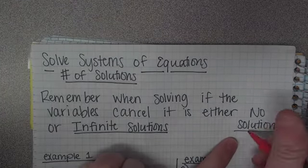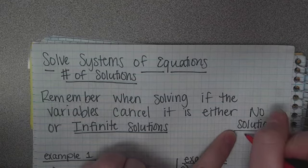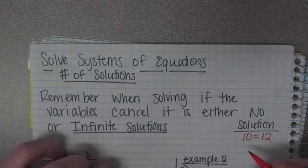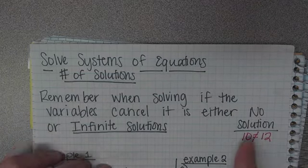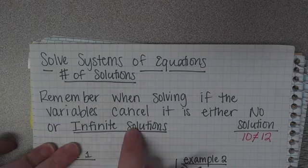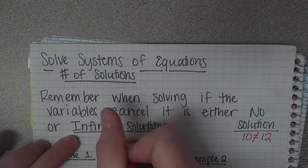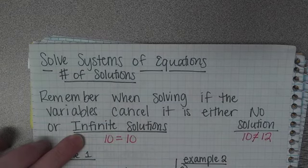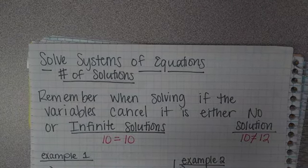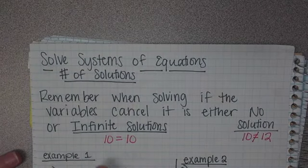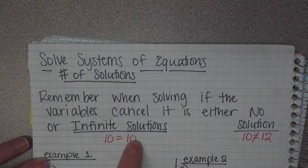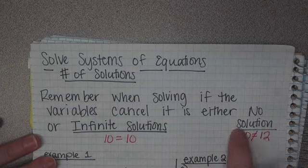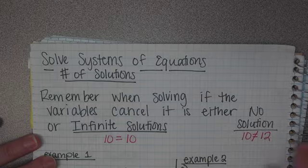The way to know which one it is: if it's no solution, whenever your variables cancel, you're left with something like 10 equals 12. Since 10 does not equal 12, there's no solution. When you're solving and your variables cancel and you get infinite solutions, it would be like 10 equals 10, meaning that they are equal. It's infinite solutions if what you're left with is equal, and it's no solution if what you're left with does not equal.